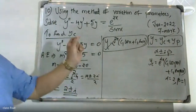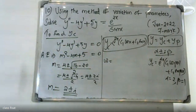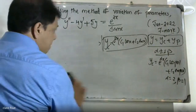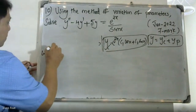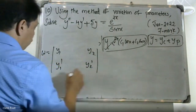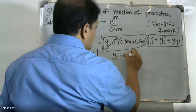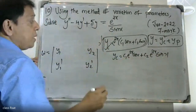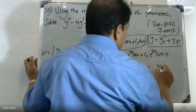For the method of variation of parameters, we set up the Wronskian determinant W using y1, y2 and their derivatives y1', y2'. From yc, we identify y1 = e^(2x)·cos(x) and y2 = e^(2x)·sin(x).